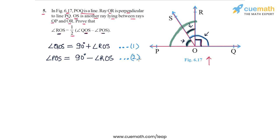All we have to do is subtract these two equations because we want to get an expression with QOS minus POS. So I'm going to do equation 1 minus equation 2. On the left side, I get angle QOS minus angle POS.